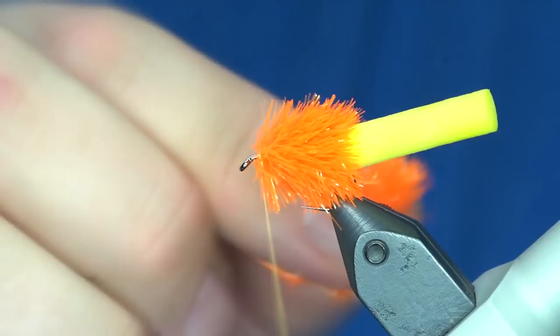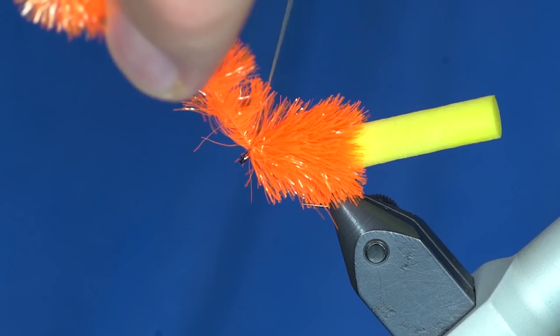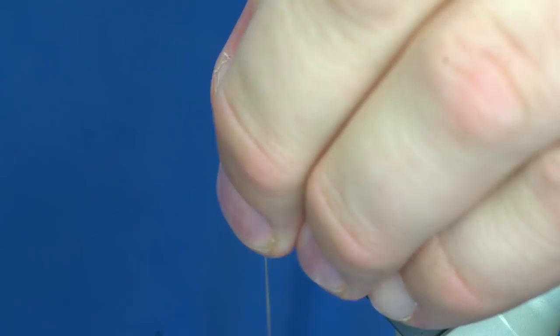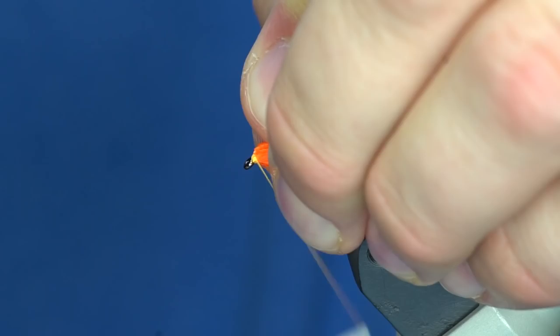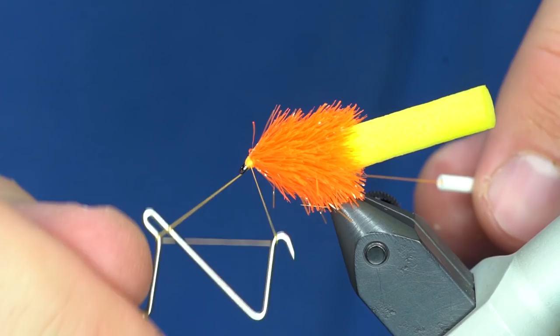Okay, so once I get to this point, I'm going to hold the fritz up and just kind of wiggle my thread, try not to catch too many of those fibers. And then before I trim it, I'm going to pull all those fibers back and just expose nothing but the eye, kind of clean it up a little bit. And then trim that off. So I've got a nice clean little head on there.